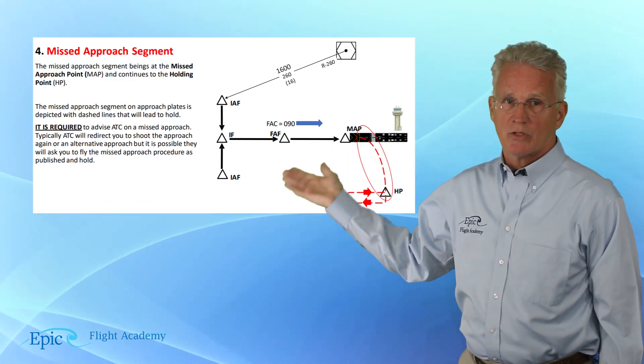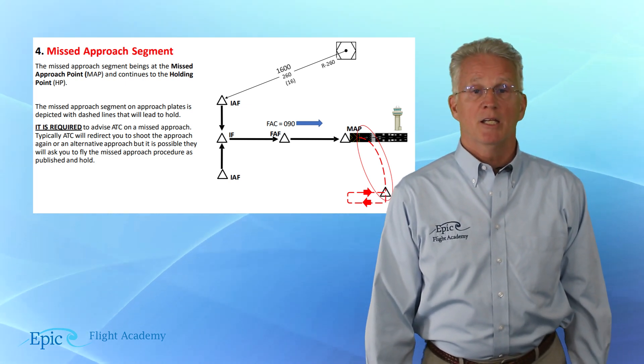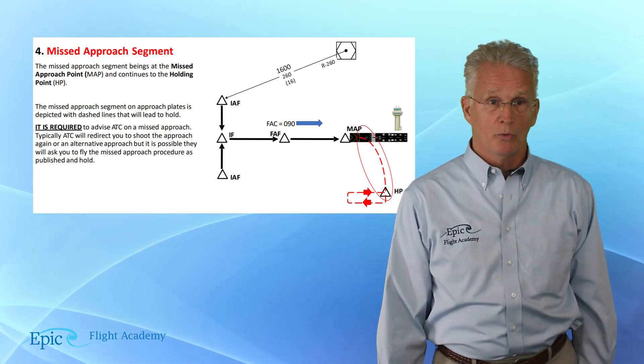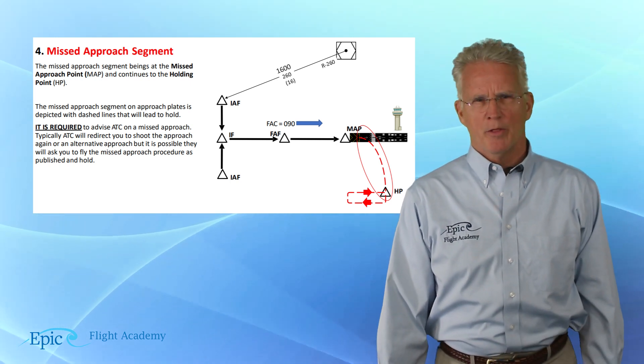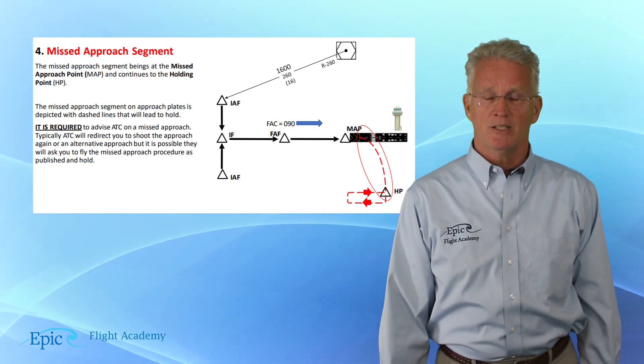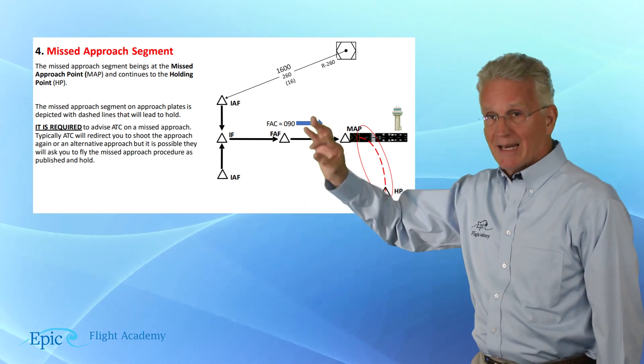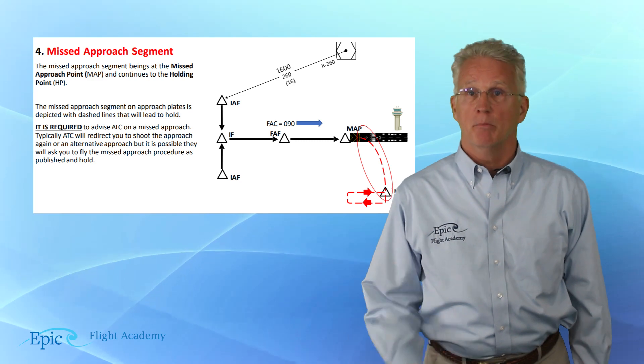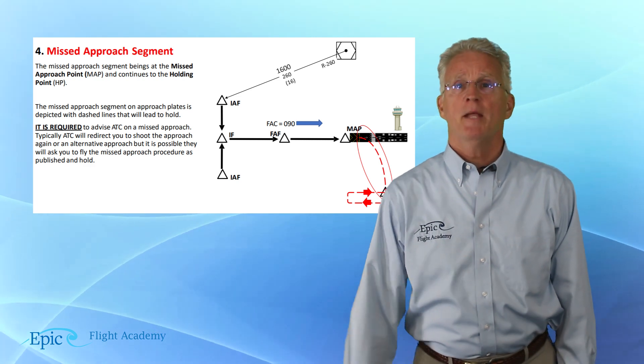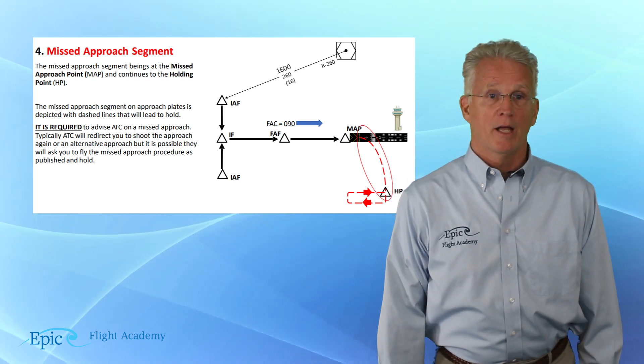This is the fourth segment of an instrument approach. We call it the missed approach segment. It begins at the missed approach point and it continues to the holding point. The missed approach segment on approach plates is depicted with dashed lines that lead to a hold. Now notice here we're depicting it in red, and that dashed line leads from the MAP, missed approach point, to the HP, the holding point. A pilot is required to advise ATC on a missed approach.